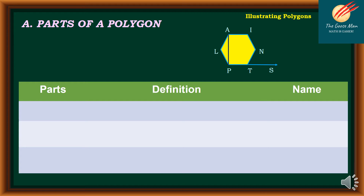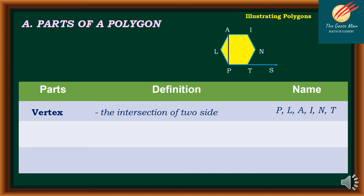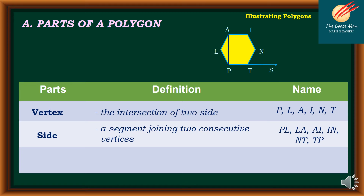For more details on the parts of polygons: Vertex is defined as the intersection of two sides. In our illustration, the vertices are P, L, A, I, and T. Sides are segments joining two consecutive vertices: line segments PL, LA, AI, IN, NT, and TP.